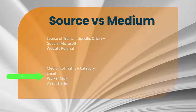The medium is more where you start putting traffic into buckets — whether it's email, display, pay-per-click, social media, or direct traffic. Those are some examples of your medium of traffic, and that's where you want to categorize them into those buckets.